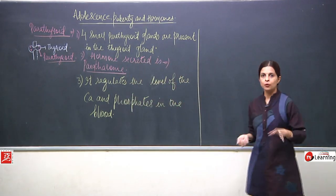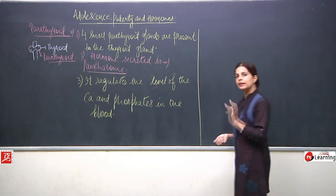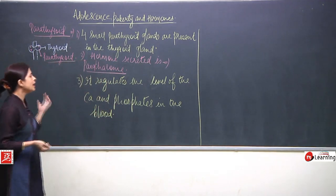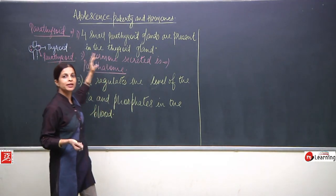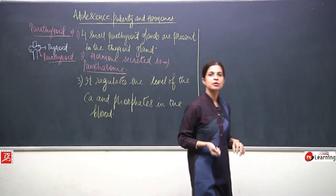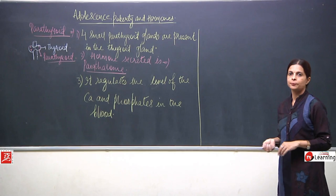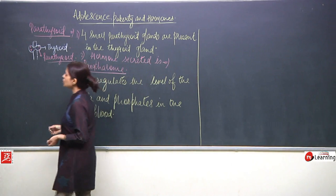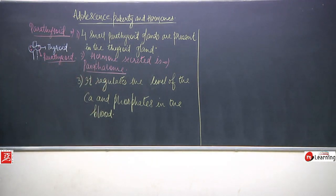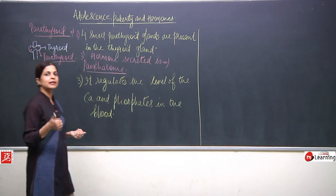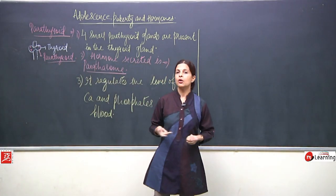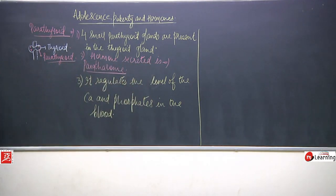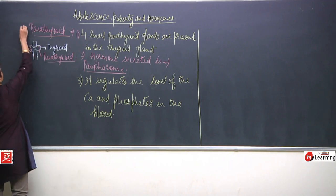So to summarize parathyroid: these are four very small glands embedded in the thyroid gland, and the function is to secrete parathyroid hormone which regulates the level of calcium and phosphate in the blood. This is the fifth gland we have discussed, after pineal, hypothalamus, pituitary, and thyroid.